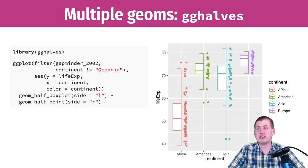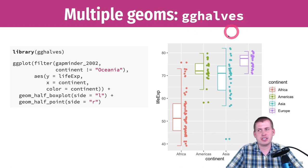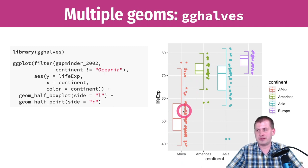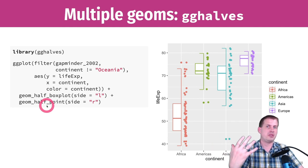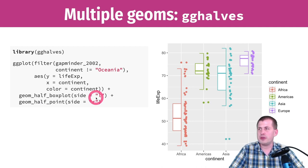If you want to show a box plot but also the individual points — without throwing away all that data — there's a package called gghalves. On the left side you get a half box plot, and on the right side a half point plot — a strip plot combined with a box plot in the same column. This prevents dots from overlapping on top of the box plot, which would otherwise require making one of them semi-transparent.